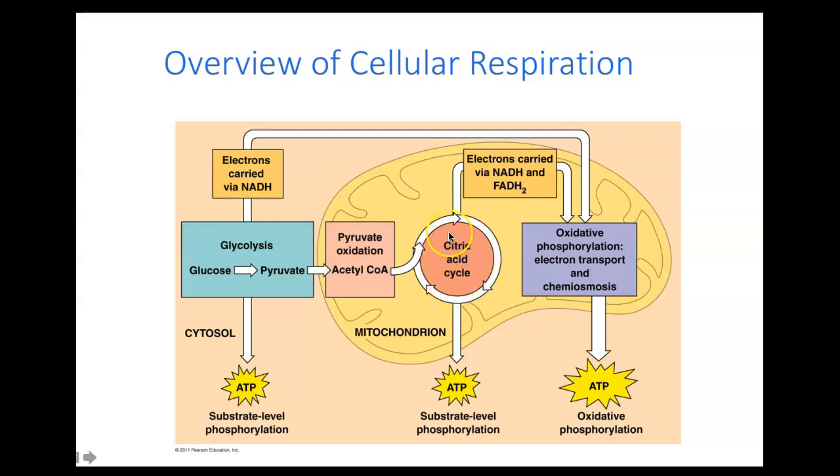Then you have the Krebs cycle, also known as the citric acid cycle, which occurs inside the mitochondrial matrix. Then you have the electron transport chain, which occurs—remember it's the proteins that are embedded in this inner membrane, that inner folded membrane. We see that inner folded membrane. Why is it like that? Well, as we saw with the FRQ that we practiced last week, the folded membrane is going to increase surface area to volume ratio, which increases efficiency.